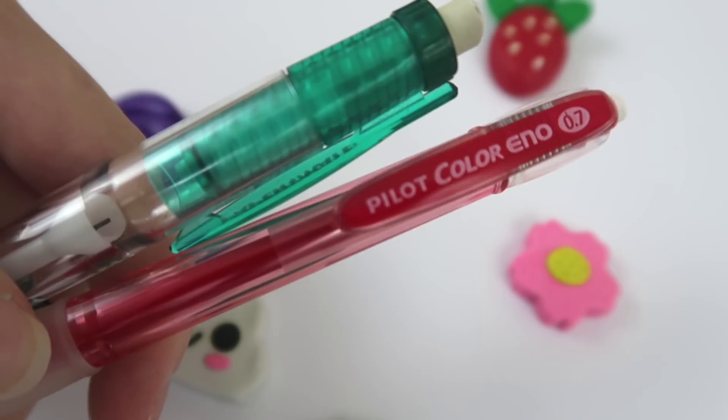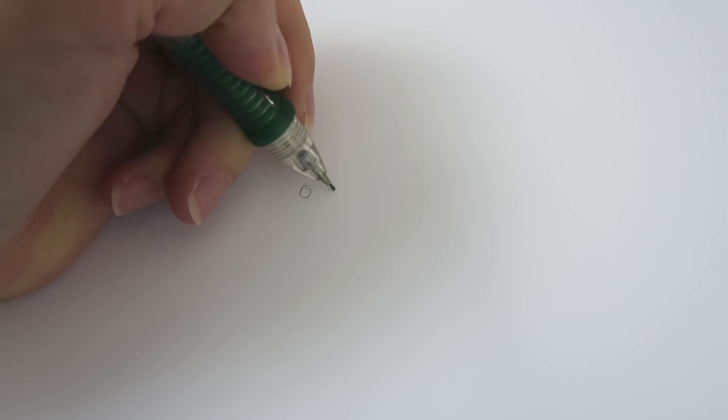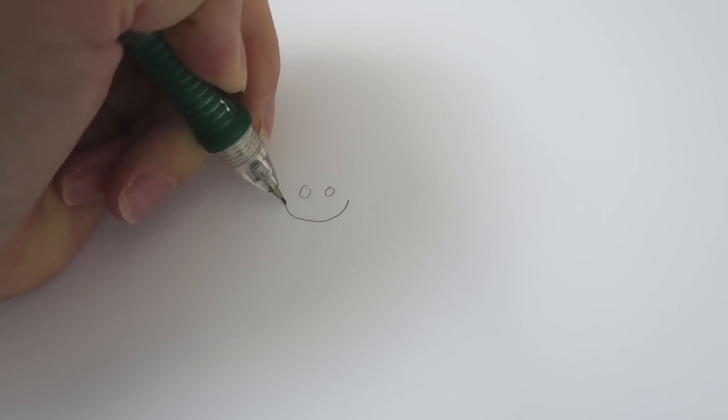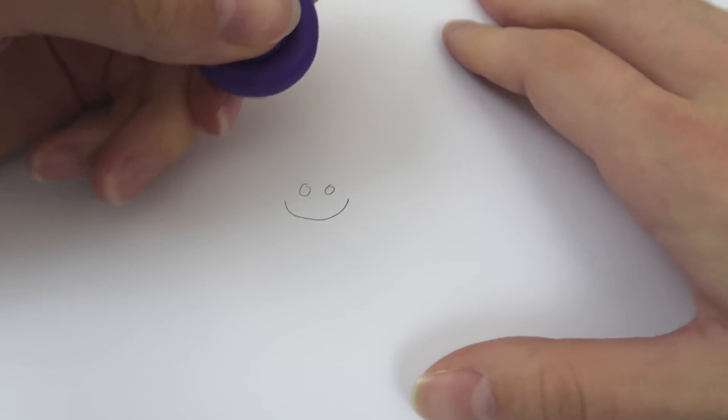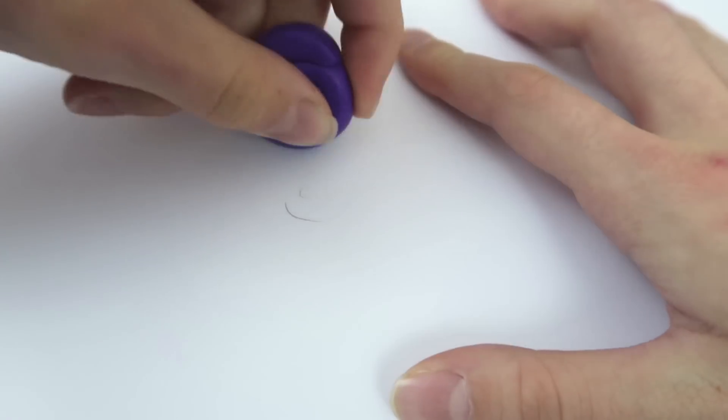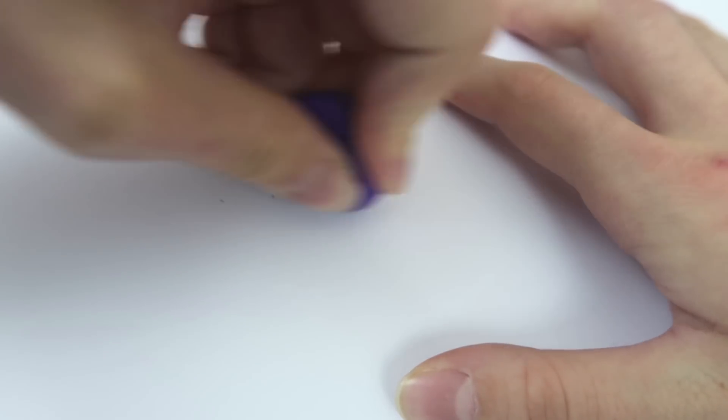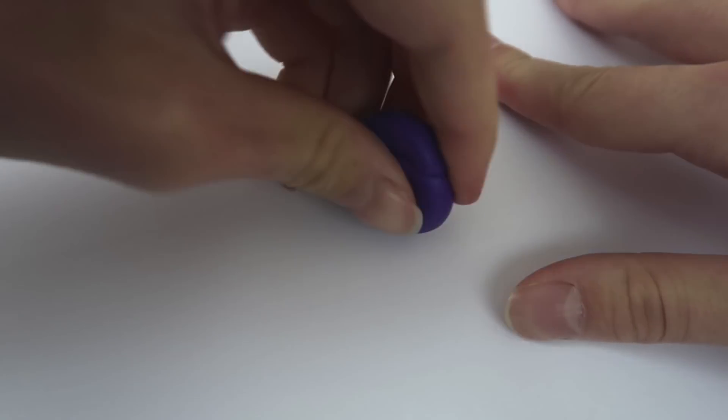So, I'm gonna use the two pencils I use to sketch most often. This is a Red Pilot Color Eno pencil and just a regular mechanical pencil. Let's hope this works. I will draw a smiley face. Just something super simple and test it out. So, I have this purple eraser. We're gonna see what happens. Oh my goodness. This thing is awesome. It worked flawlessly. You can't even see it really anymore. This is amazing.